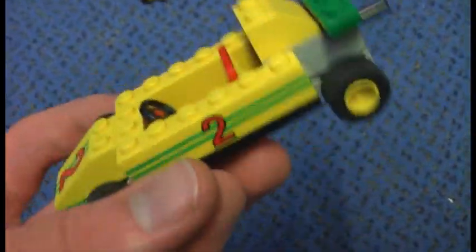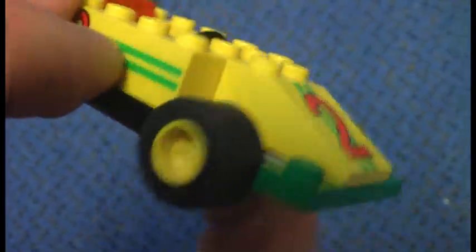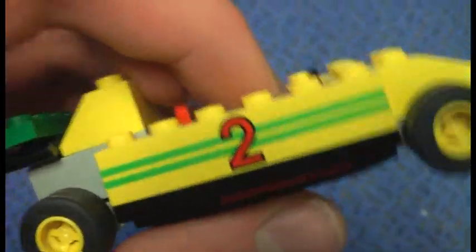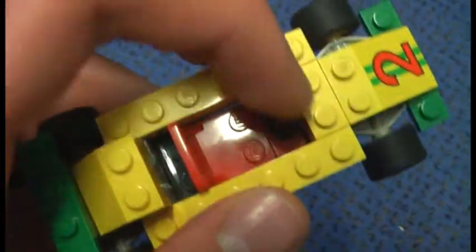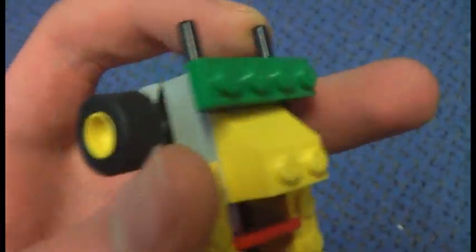And now onto the set. First, the car. This is the car. Here is the number 2, here is the front, and here is the side. Here is the steering wheel place where the figure sits, and the exhaust pipes and the tires here.